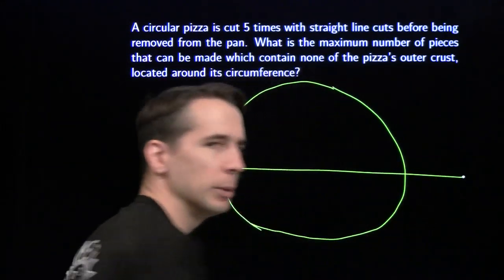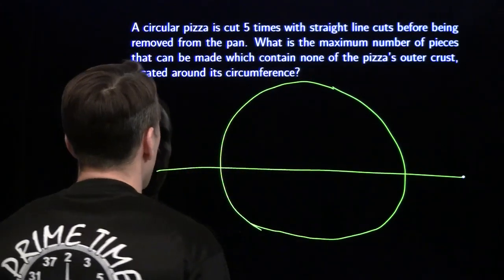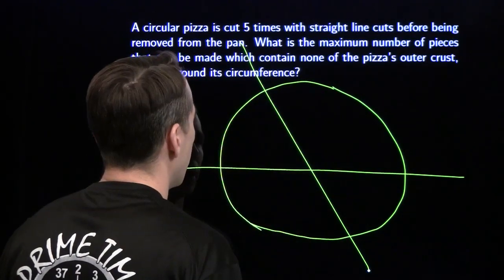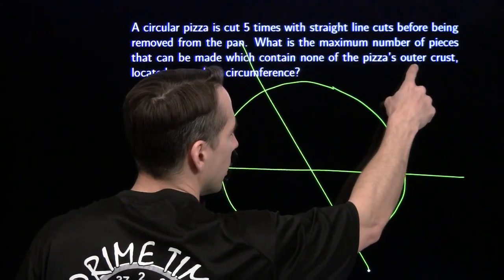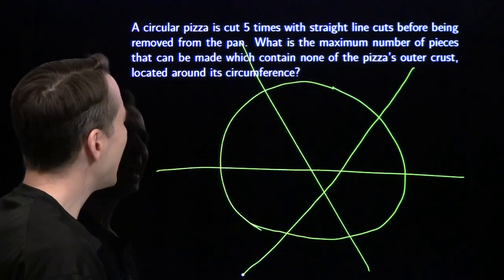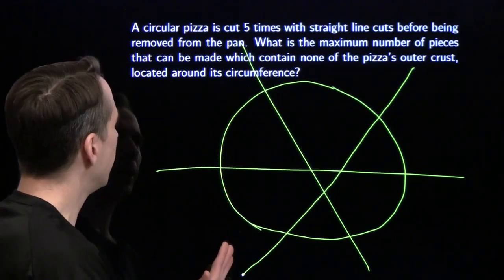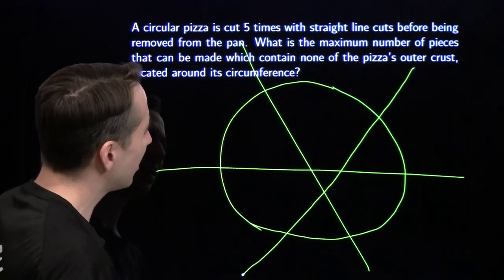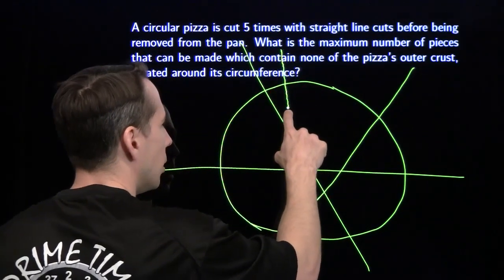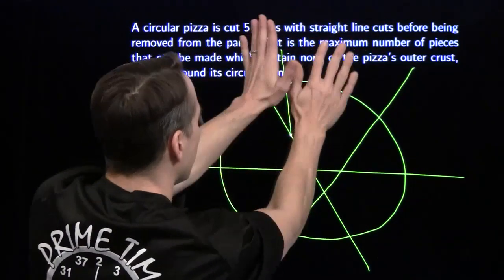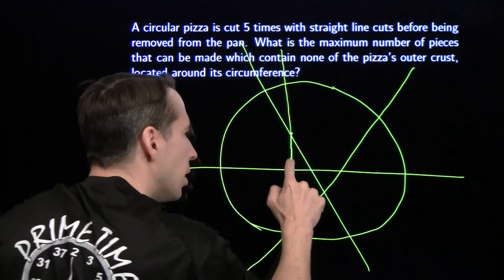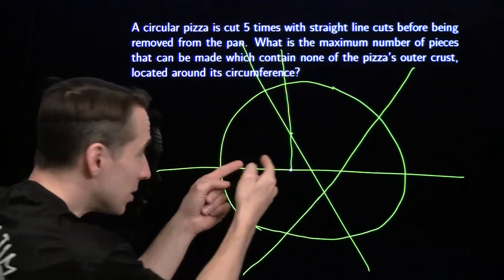Starting with the first cut — no yummy pieces, it just cuts the pizza into two pieces with crust. The second cut also makes no yummy pieces. With our third cut we can make a yummy piece — a cut like this gives us a yummy piece right in the middle, no crust at all. Now for the fourth cut: as we draw, when we hit one of the other cuts in the open space near the edge, we just make two yucky pieces. But when we keep going and hit another line inside the pizza, we split a big yucky piece into a yummy piece and a yucky piece.